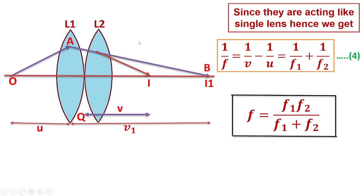So the equivalent focal length of two thin lenses kept in contact with each other is given as: F equals the product of F1 and F2 divided by the sum of F1 and F2. That is, F = F1×F2 / (F1 + F2). This F is the equivalent focal length — it acts just like a single lens.